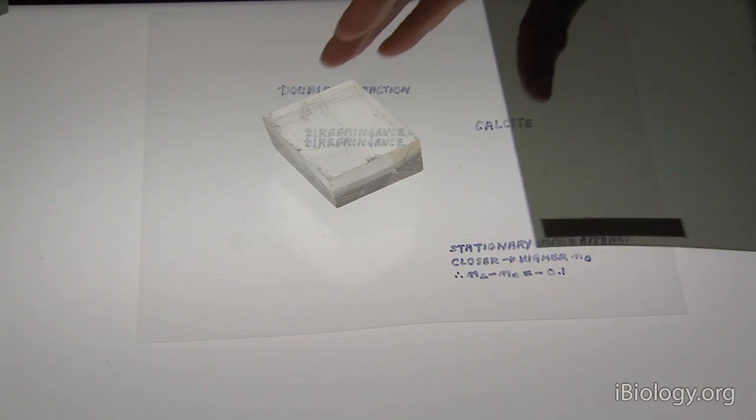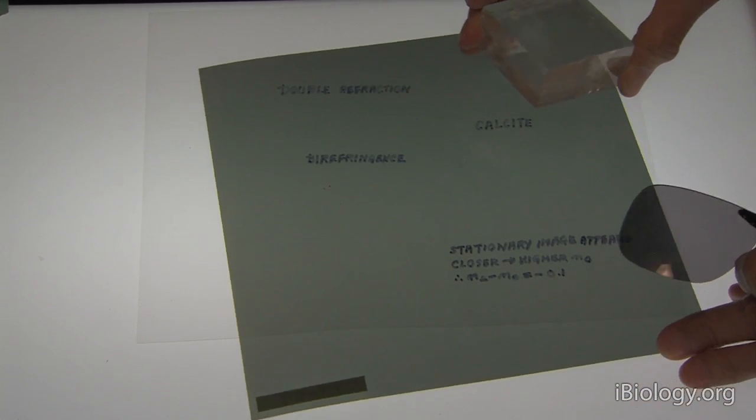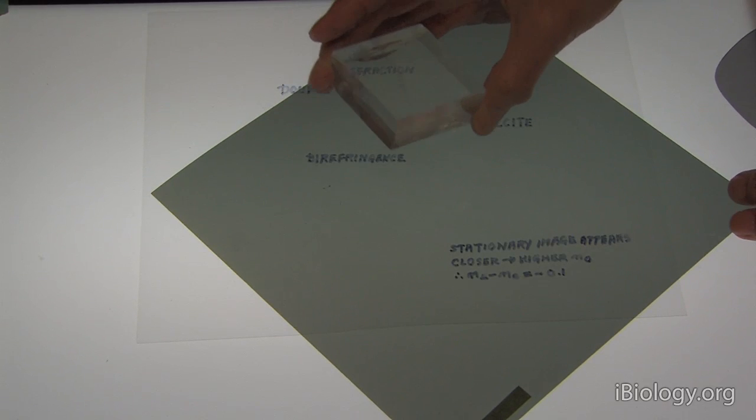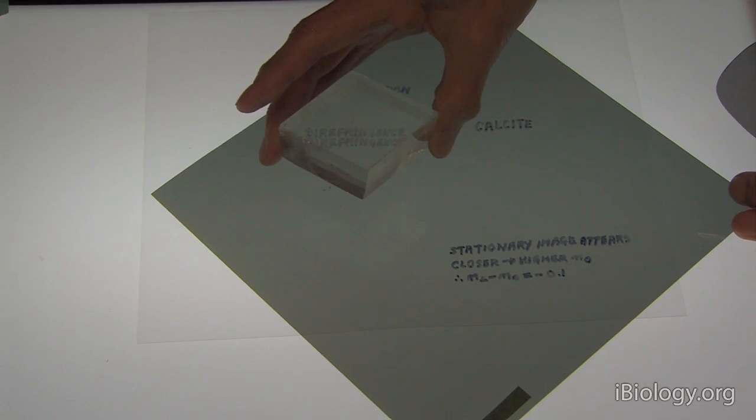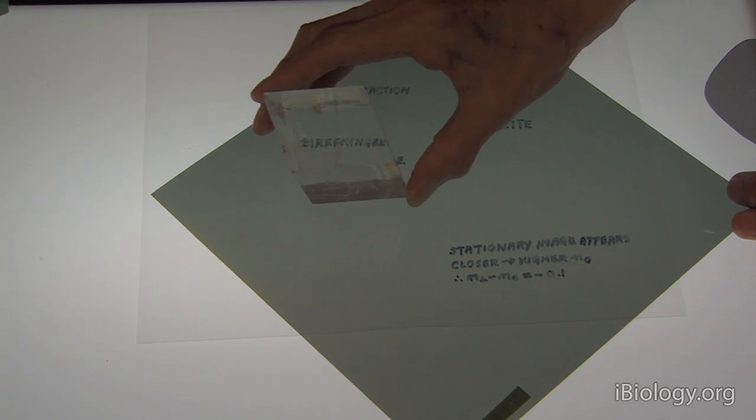So now, what we're going to do is take two polarizing materials. Here is the polarizing material I'm putting under the crystal. And depending on how I set the crystal, we should be able to see two images.